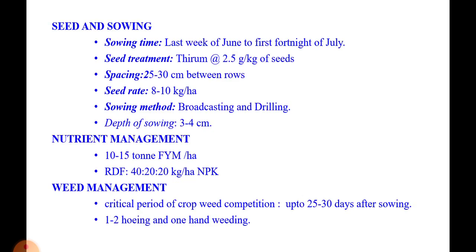Seed and sowing: sowing time is the last week of June to the first fortnight of July. Seed rate is 8 to 10 kg per hectare. Seed treatment is done with Thiram at the rate of 2.5 grams per kg of seeds. Spacing is 25 to 30 cm between rows. Sowing methods include broadcasting and drilling, at a depth of 3 to 4 cm.